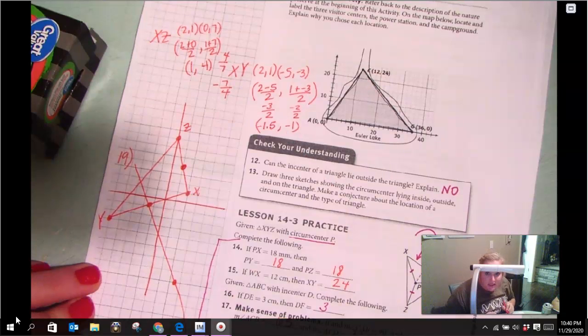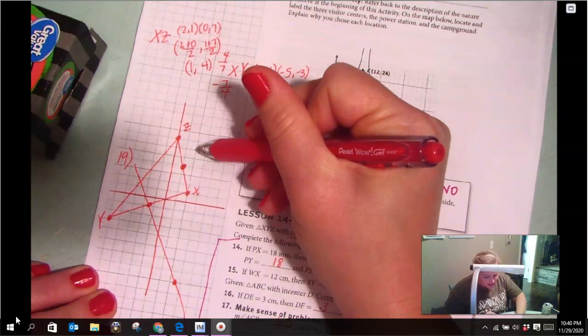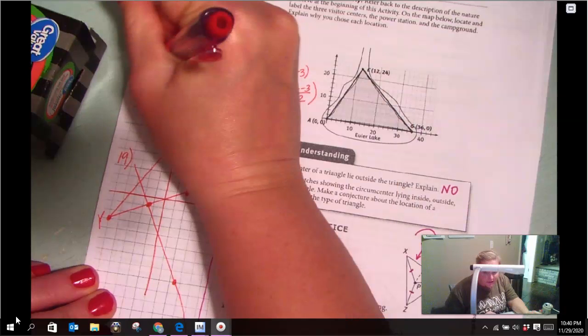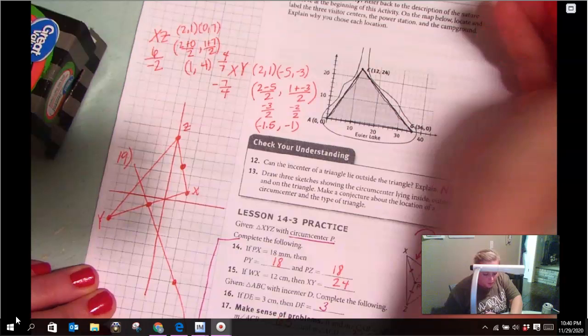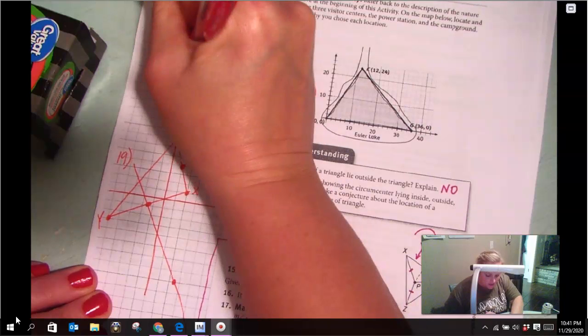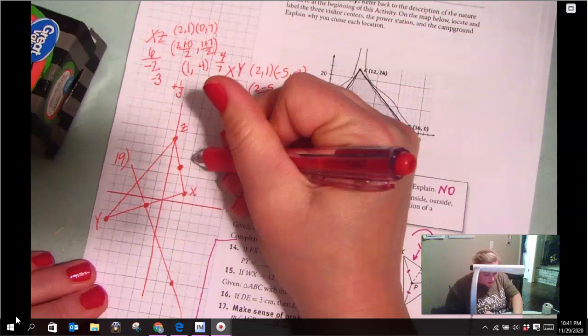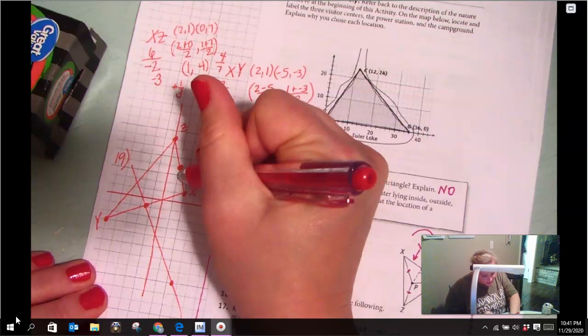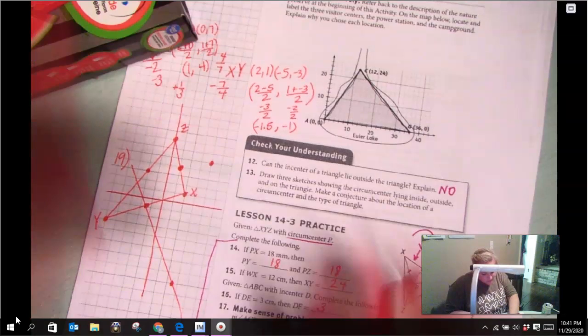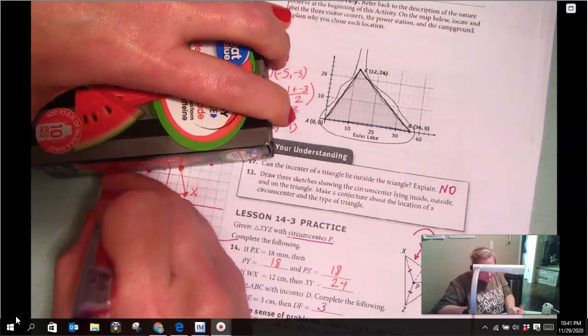And then again, I need the slope of XZ. So, I'm just going to count it out. Rise 6, run 2 to the left, which makes it negative. So that is going to be 6 over negative 2, which gives me a slope of negative 3. So for perpendicular slope, I need positive 1 third because it's the opposite reciprocal. So from this dot, I'm going up 1 over 3, and again, down 1 over 3 to the left.